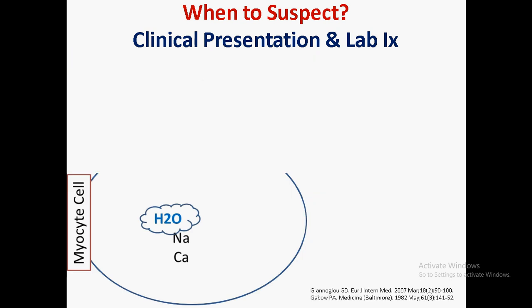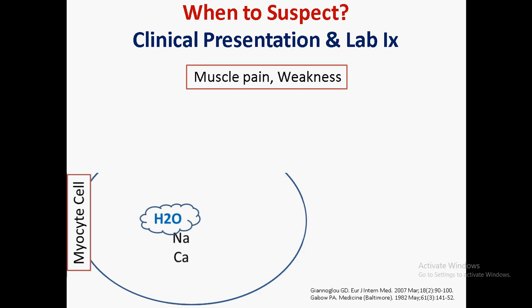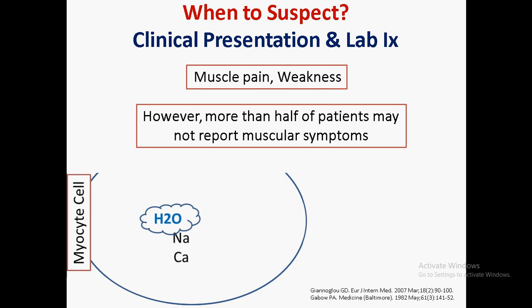Regarding muscle symptoms: it is logical that the patient presents with muscle pain and weakness, but importantly, more than 50 percent of patients may not report muscular symptoms. So, similar to the possibility of absent myoglobin in urine, muscle symptoms may also be absent.